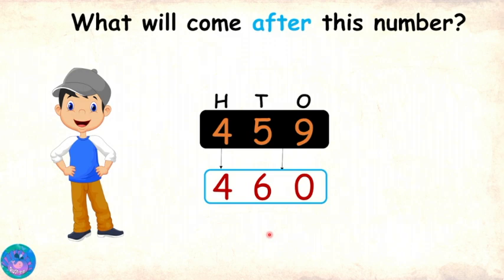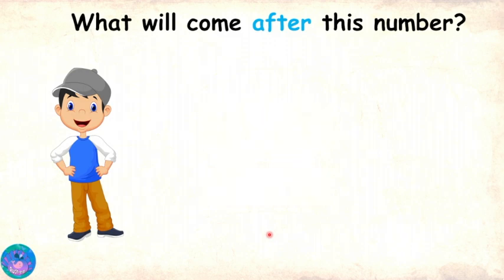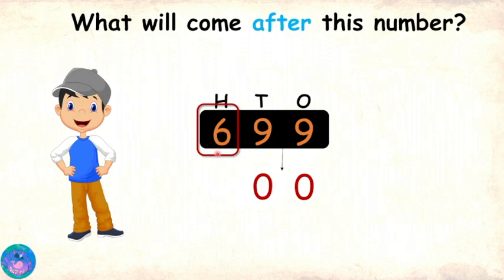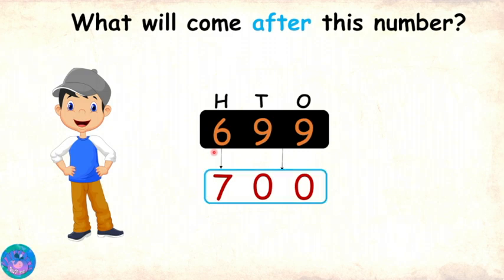But Sam, there are some numbers where this will not work. For example, six hundred and ninety-nine. If the second part of the given number is ninety-nine, then the second part of the successor will become zero zero — zero in the tens place and zero in the ones place. Now coming to the first part, in this case the first part of the successor will become what comes after the first part of the given number. The first part of the given number is six. What comes after six? Seven. So, seven will become the first part of the successor. The successor is seven hundred.